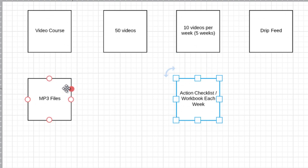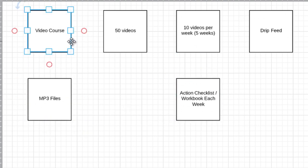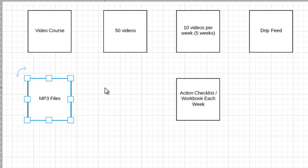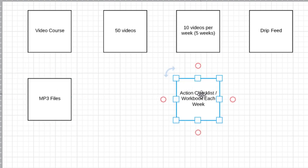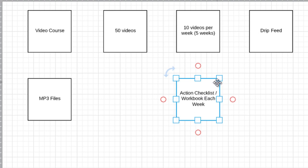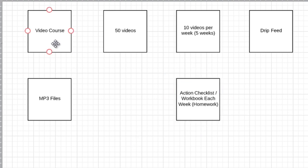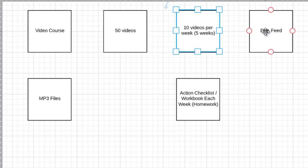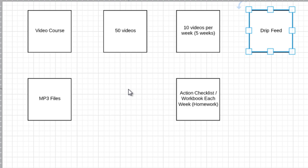Now that we've talked about learning styles — I'm going to stick with videos, I'm going to do MP3 for auditory folks, and for kinesthetic people who like hands-on stuff, we have the action checklist and workbook each week, so every week they have homework. So we've talked about what we're selling, which is a video course, how we're going to deliver it via drip feeding, who we're selling to in terms of learning styles, and now we need to talk about price points.